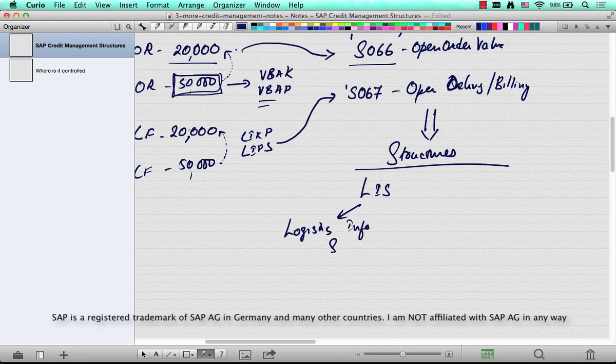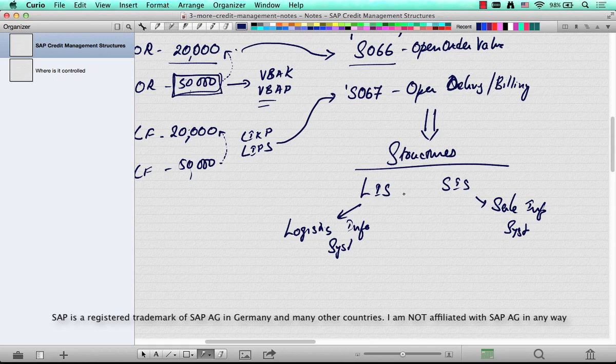Or SIS, which is a sales informational system. Now although these tables or structures have a different purpose altogether, credit management, rebates, and functions like these use the LIS or SIS structures to accumulate values that spread across a time frame.